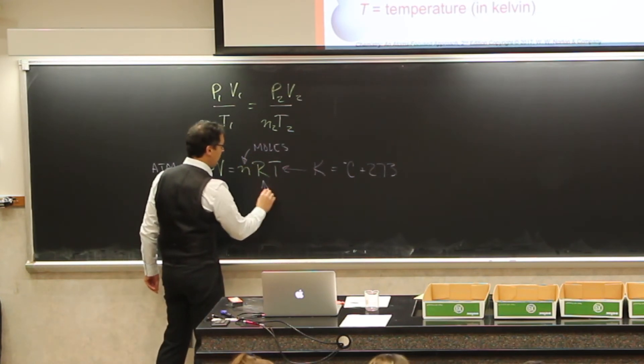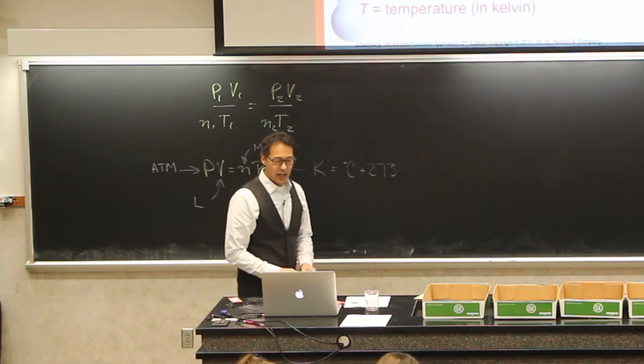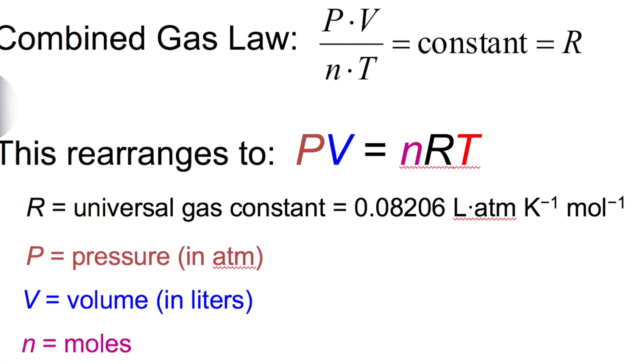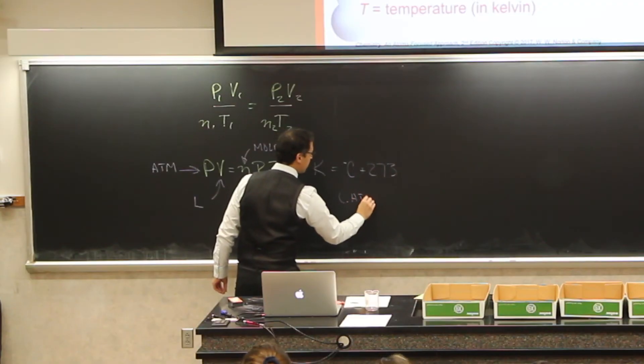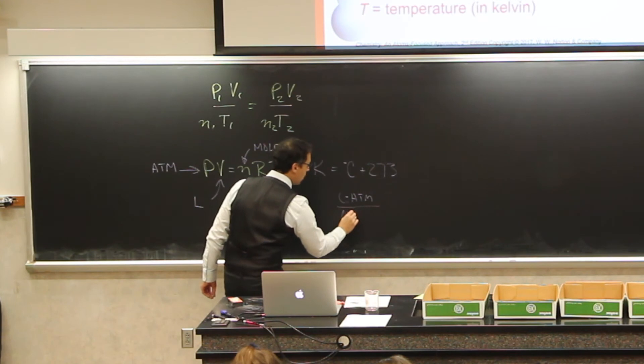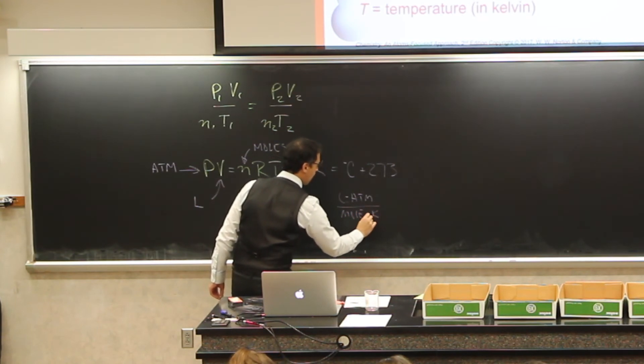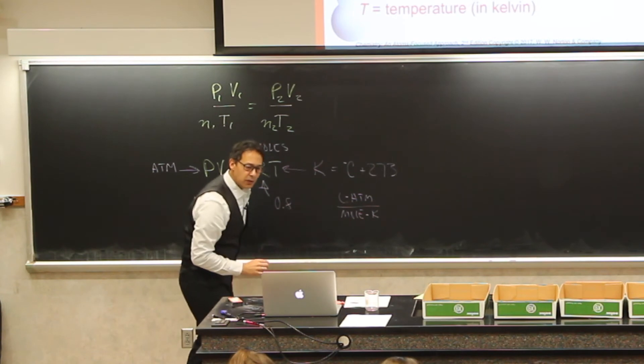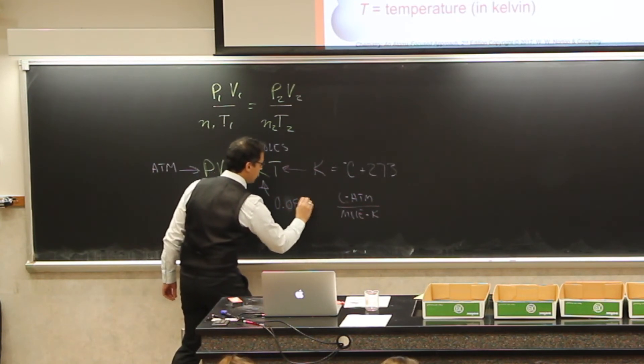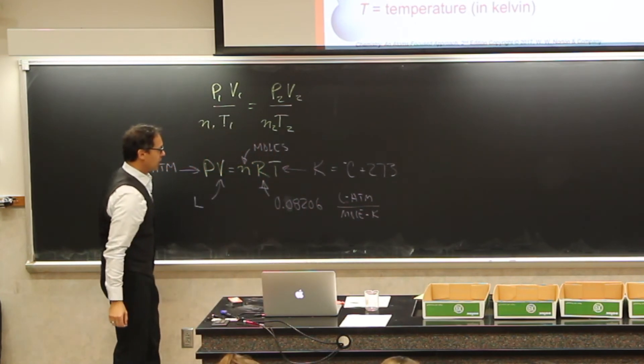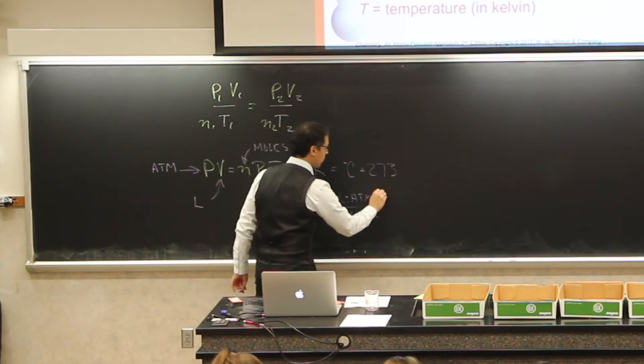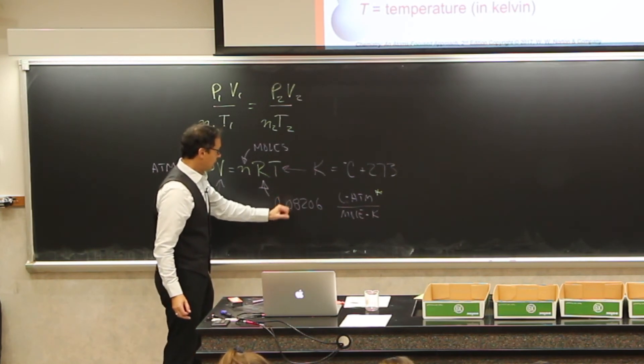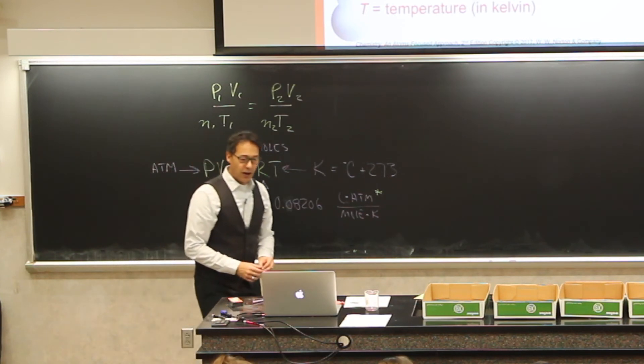And then the last thing here that we haven't talked about is this thing called r. And r is a gas constant, it's a universal gas constant. So, if we were to take this equation and solve for r, our units on that would be liter atmospheres over mole Kelvin. And the number on this is 0.08206, liter atmospheres, mole Kelvin. And put a star next to that because that's one of those things that comes up again and again. Now, you don't need to memorize it. I would give it to you perhaps on a test, but you've got to know what to do with it. And that's the value of r, it's a gas constant.